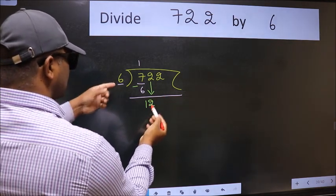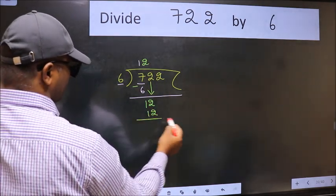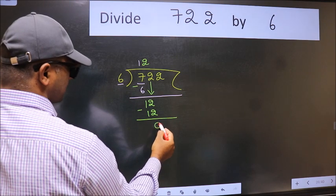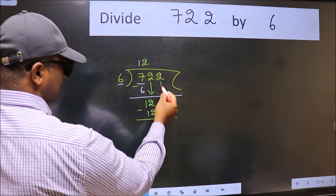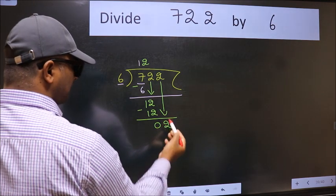When do we get 12 in 6 table? 6×2 is 12. Now we subtract. We get 0. After this, bring down the beside number. So 2 down. After this step, the mistake happens.